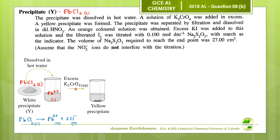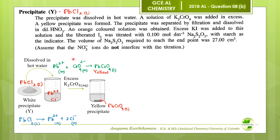Next, a solution of potassium chromate was added in excess and a yellow precipitate was formed. With the addition of excess potassium chromate, the lead²⁺ ions react with chromate ions to form yellow lead chromate precipitate. Therefore, this yellow precipitate is lead chromate.